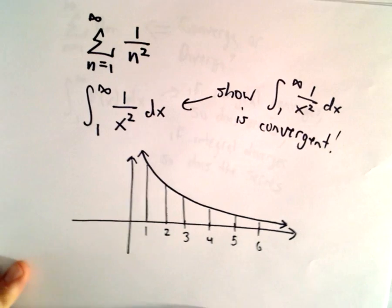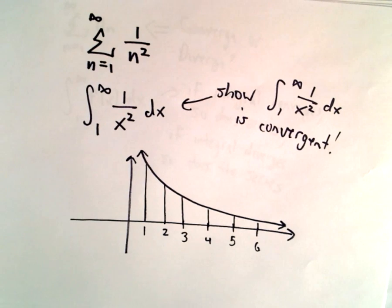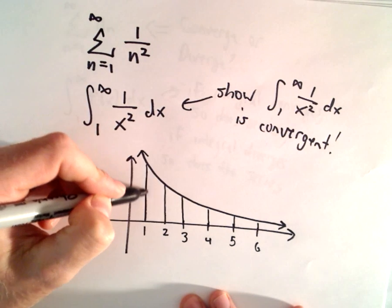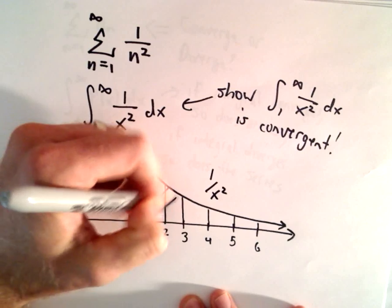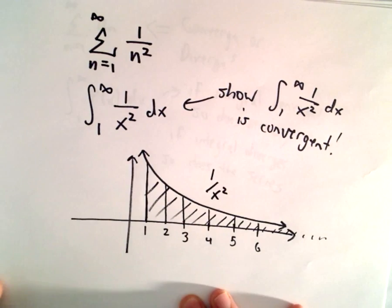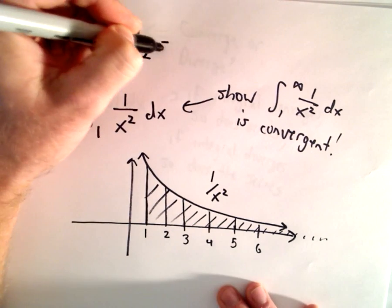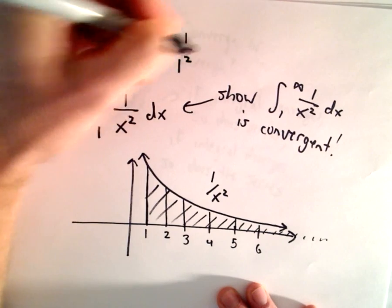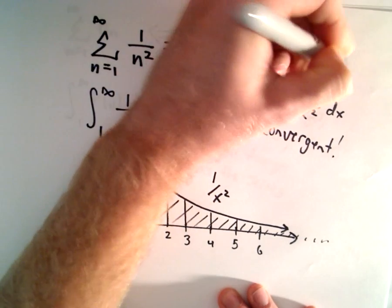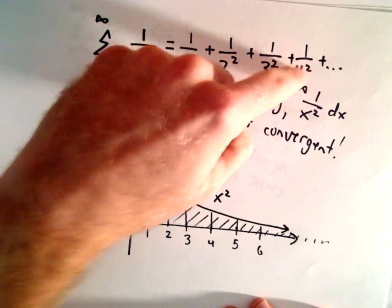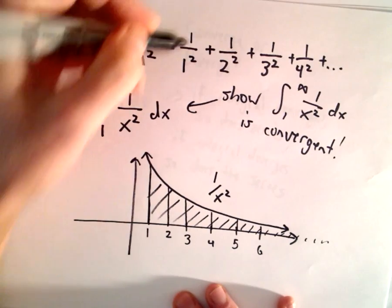I'll let you convince yourself of that — you can certainly show without too much difficulty that this integral is convergent. What that tells us is that if you look at the area between x equals 1, the x-axis, and the curve 1 over x squared, and you add up all that area going on forever and ever, it's going to be finite. That's what convergent means. Now let's go back to our series and expand it: plugging in n equals 1, 2, 3, 4 gives us 1/1², 1/2², 1/3², 1/4², etc. The idea is we can relate the terms in our series to little rectangles on our graph.